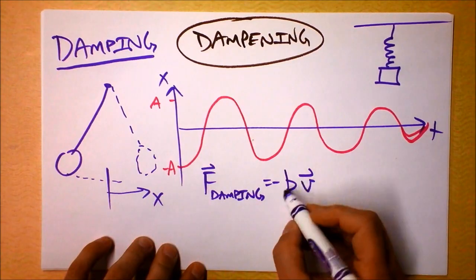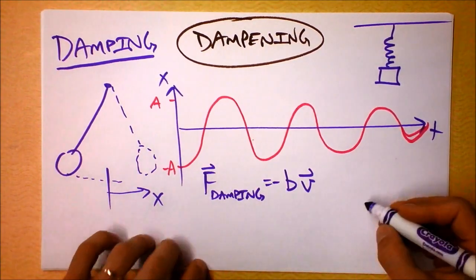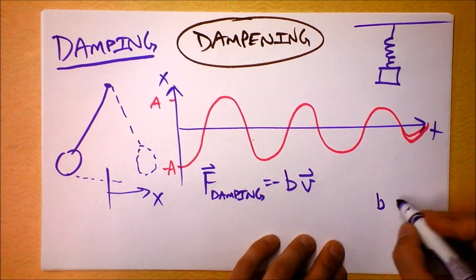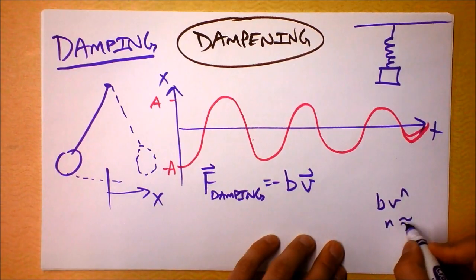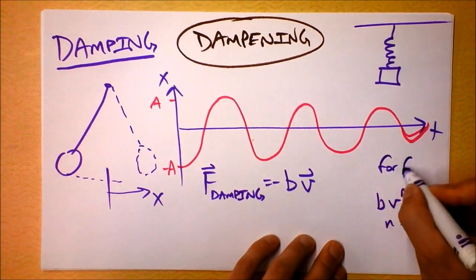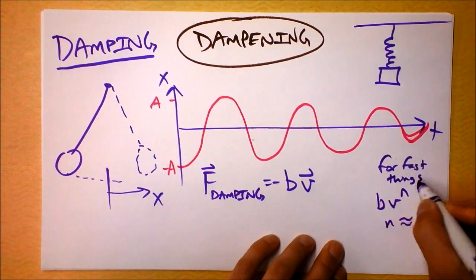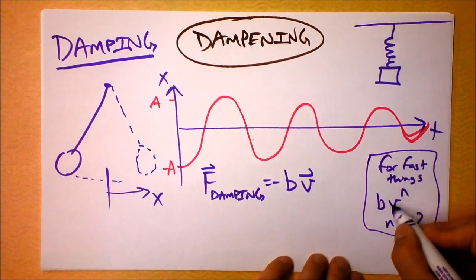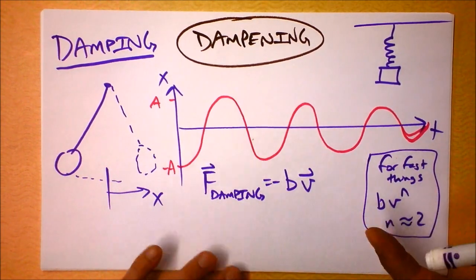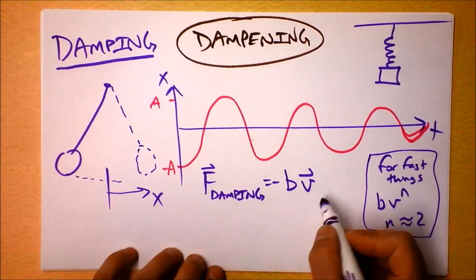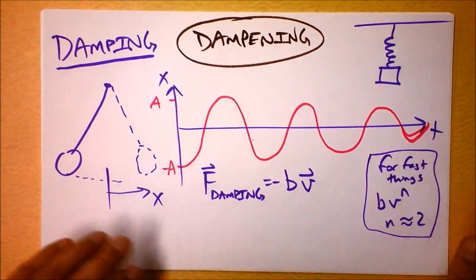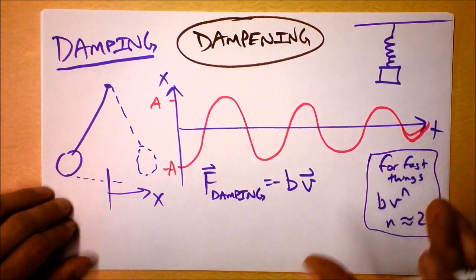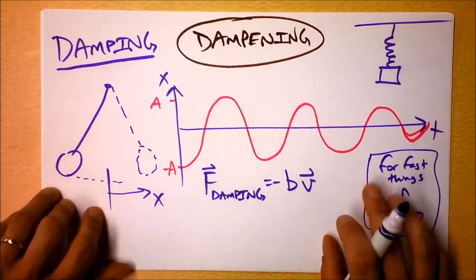As we've seen in a dropping coffee filters lab, there's a frictional force on something moving very fast. We might have b times v to the n, where n is about 2 or so for fast things. There are even small terms of v to the 3rd and v to the 4th for very high speeds — the damping force from wind becomes stronger and stronger. If you stick your hand outside a car going 10 miles an hour, you don't notice much, but at 60, your hand is significantly pushed back.